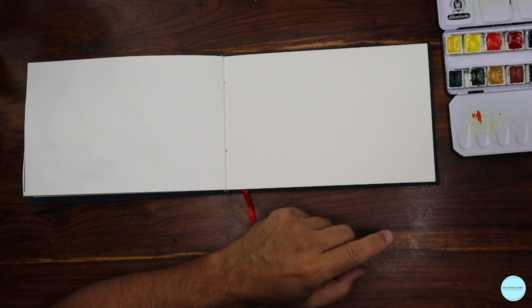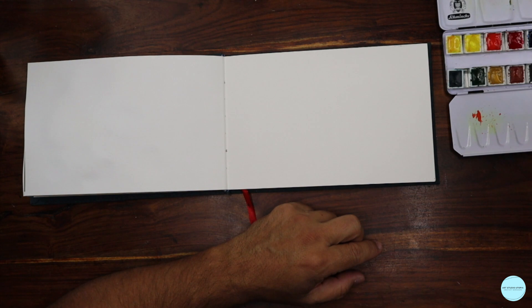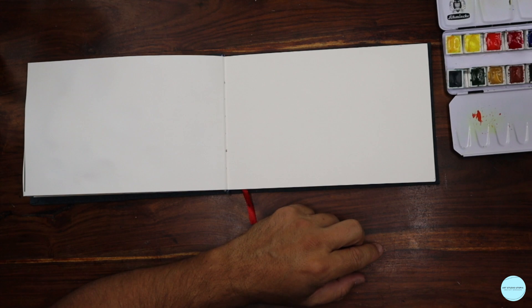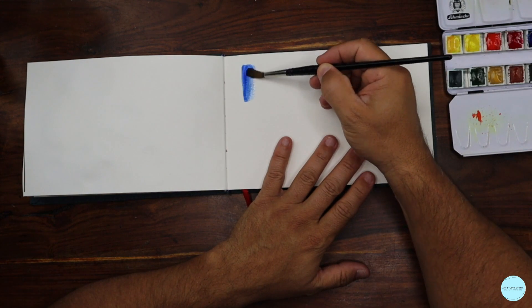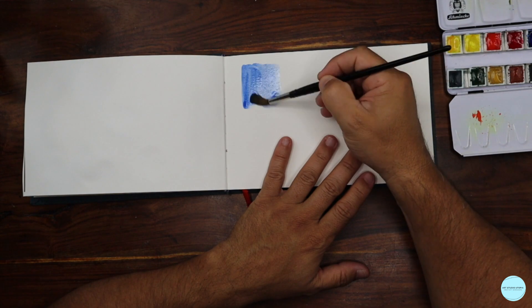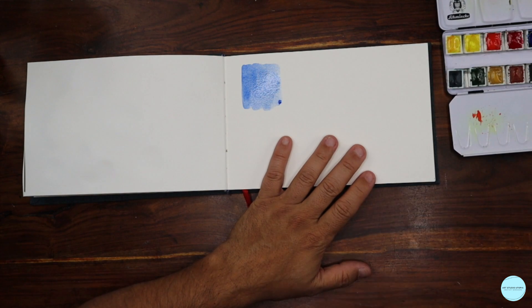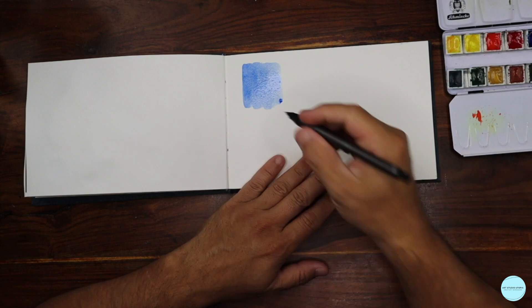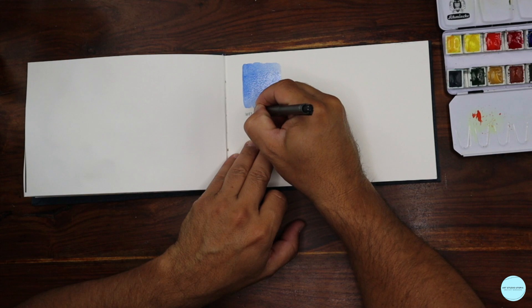We're going to look at the difference between the wash and layer, so I want you to pick your favorite color. I'm going to pick blue and I'm just going to lay down wet on dry and just put it down just like this and let it be.